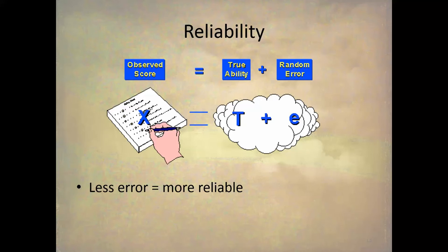This equation is very important: the reliability of the observed score — the score that you get, for example a 6.2 on the BSRI masculinity scale — is made up of your true ability, that is your true level of masculinity, plus random error. Since your observed score equals your ability plus error, less error means the test is measuring your true ability, which means it's more reliable.